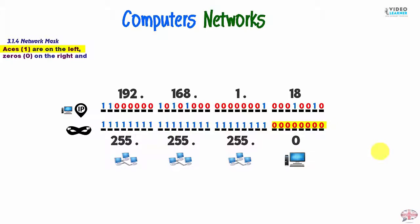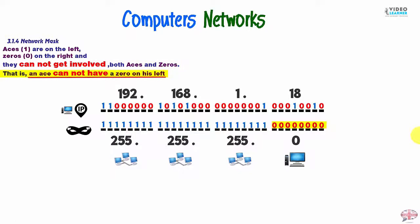Aces are on the left, zeros on the right, and they cannot get involved, both Aces and zeros. That is, Aces cannot have a zero on his left, and the zero cannot have an Ace on his right either. That is to say, in Network Mask you will never see something like that. It's not acceptable.